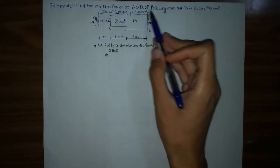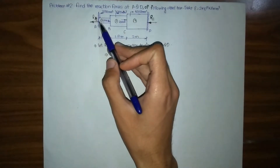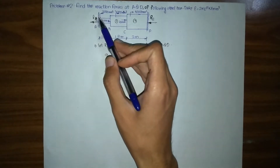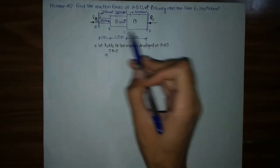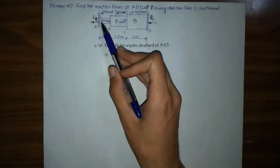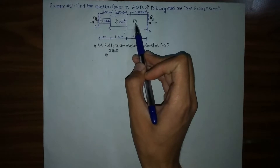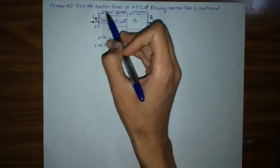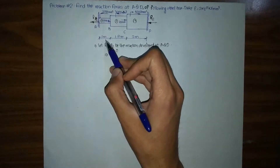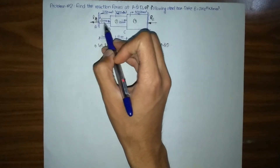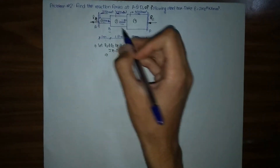Find the reaction forces at A and D of the following steel bar, and take Young's modulus E equals to 2 × 10⁵ Newton per mm². As you can clearly see, we have a steel bar with 2 rigid supports at A and D. The steel bar consists of 3 portions, with areas 200 mm², 300 mm², and 400 mm² respectively. We have a force of 100 kN acting at B and 200 kN acting at C.